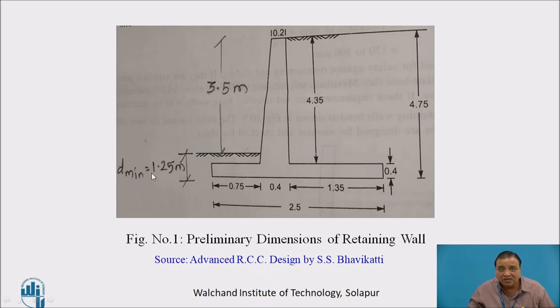We have to determine D minimum, which is the minimum depth of foundation below ground level. That is given by SBC divided by the density of soil into coefficient of active earth pressure square. Then we can determine the actual height of stem and the total height up to the base of the retaining wall, which is to be used for stability analysis of this particular structure.